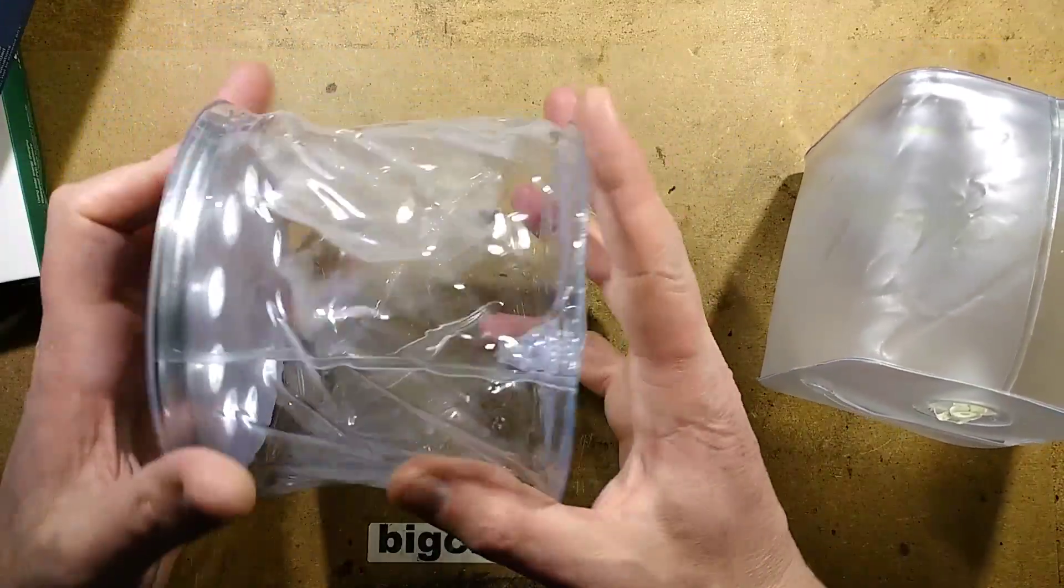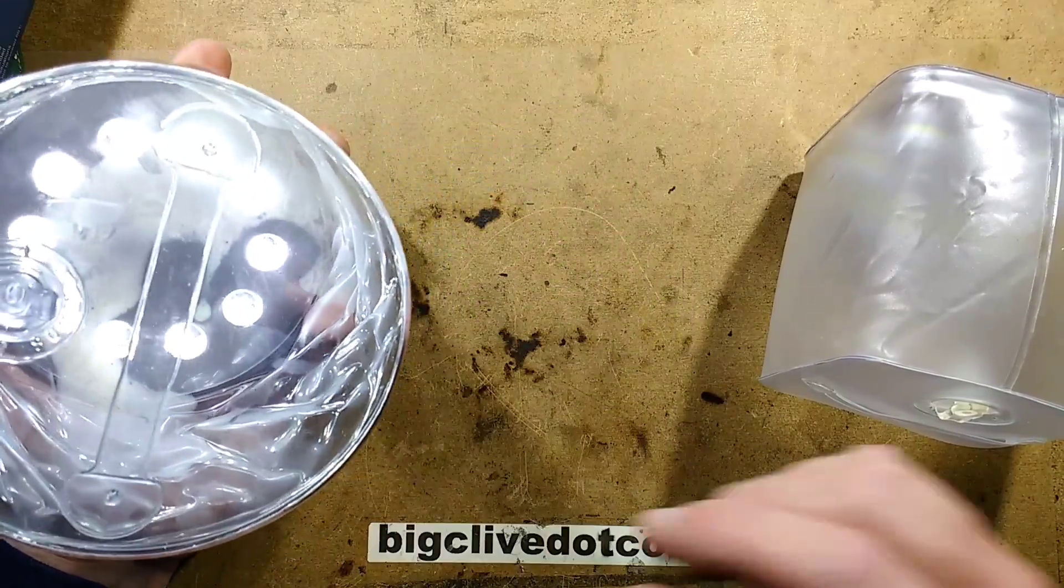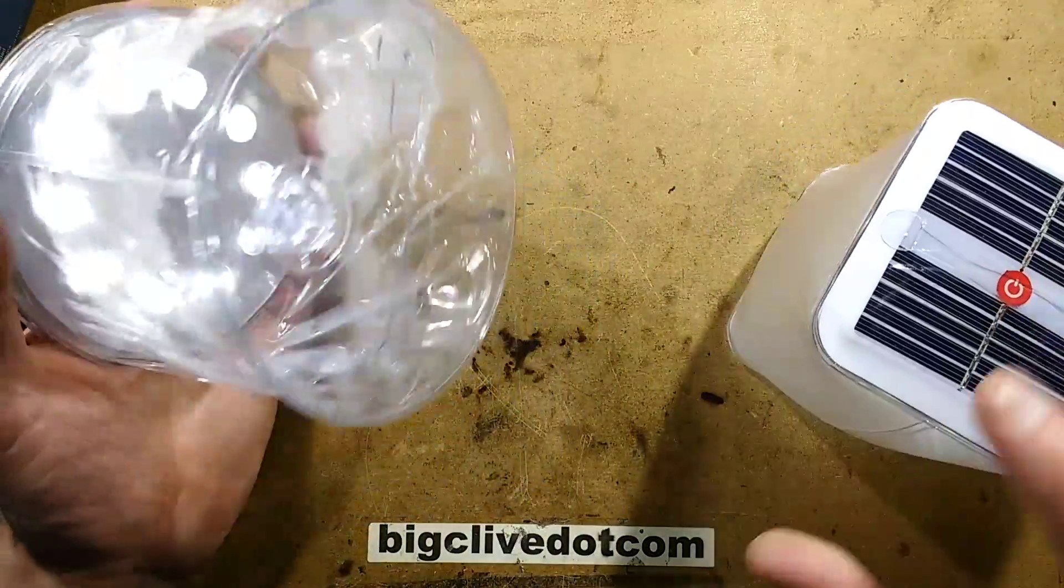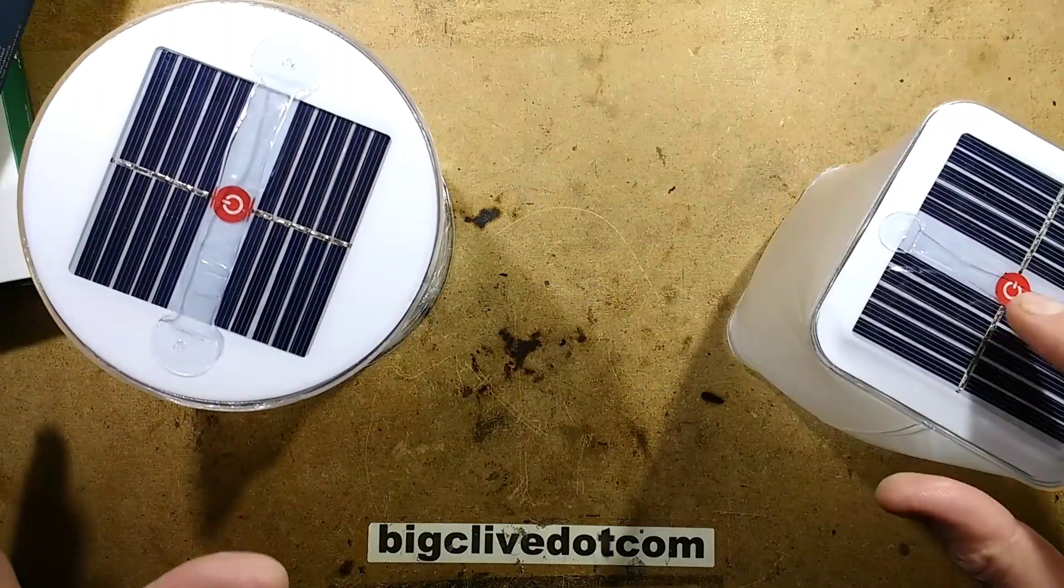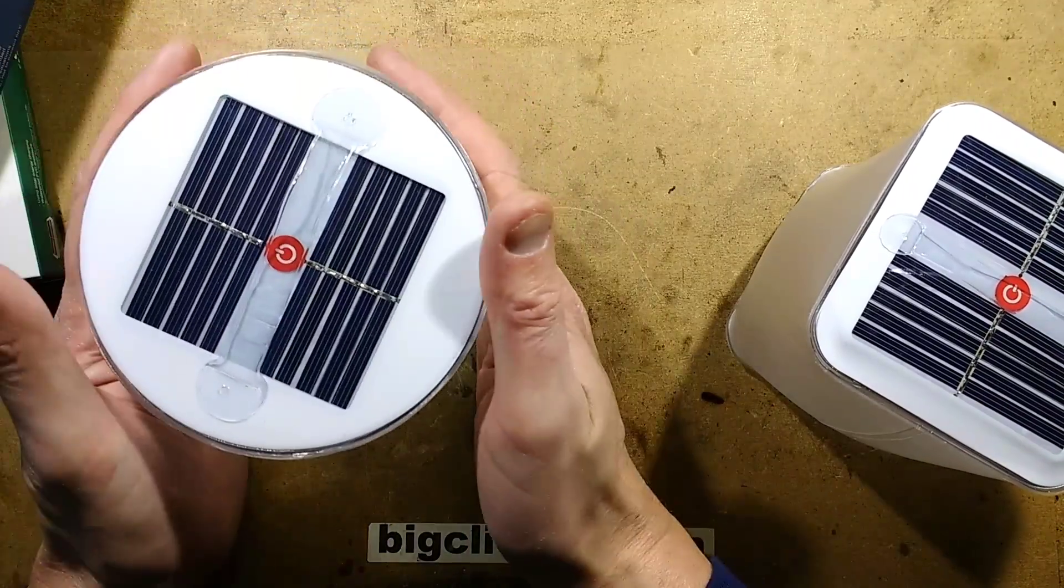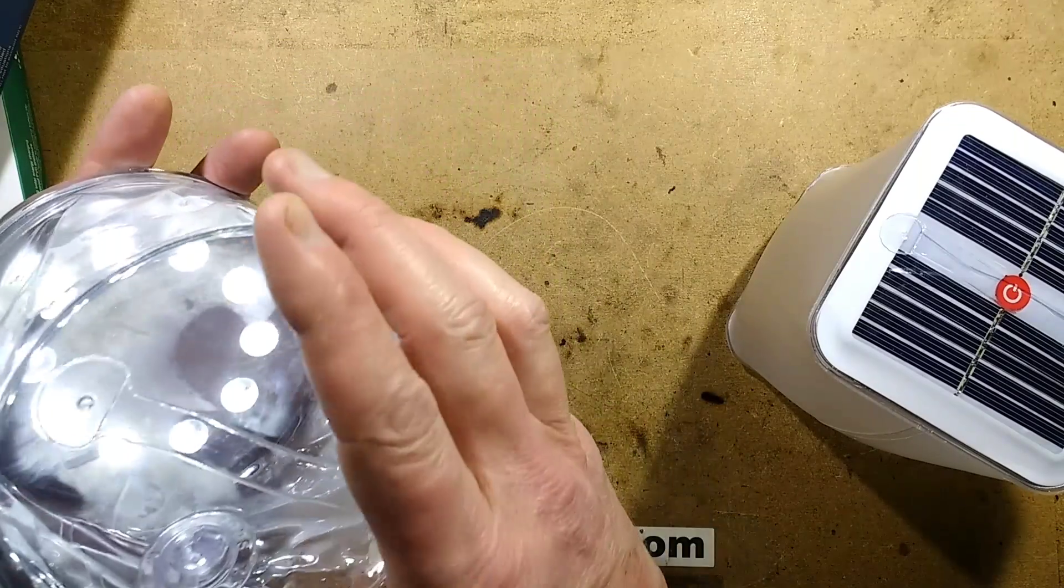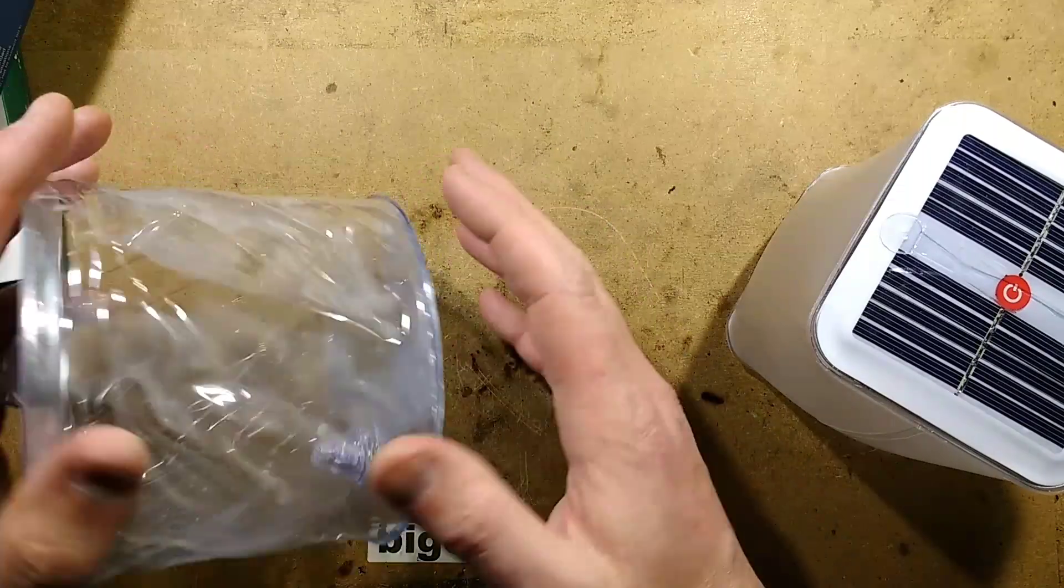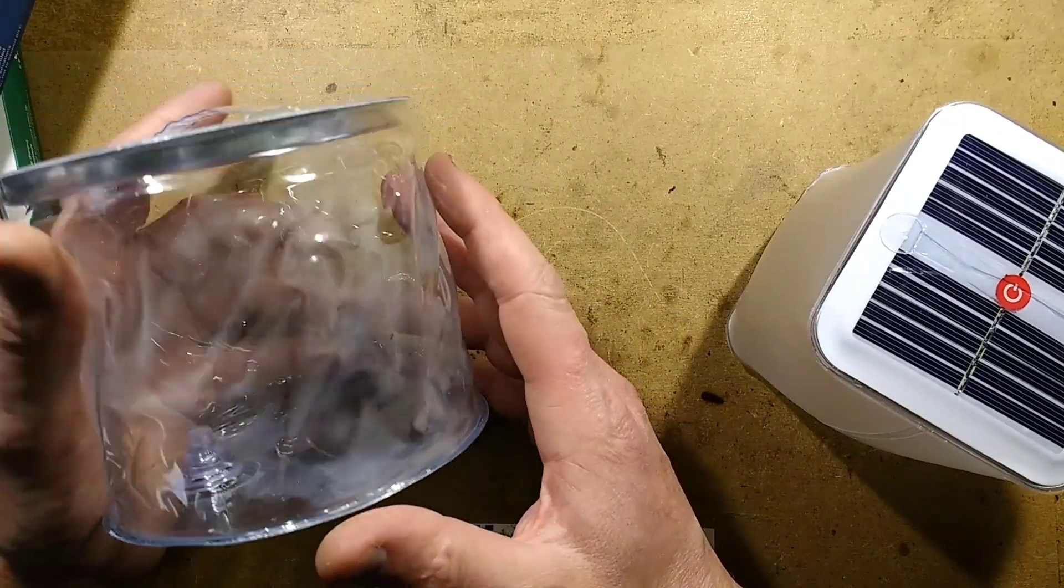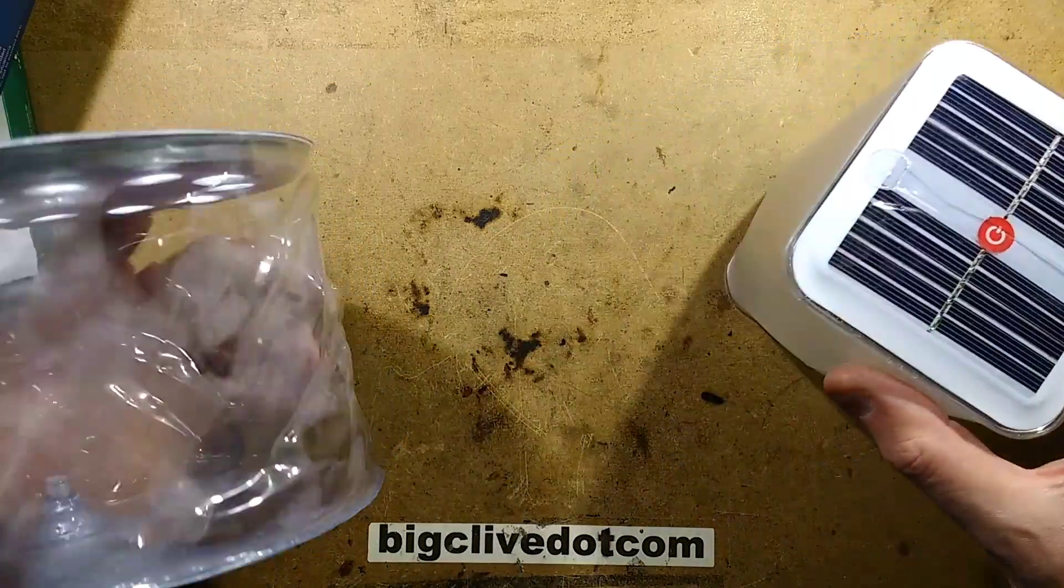This one would work better just with the bare disc on its own because all the clear stuff does is offer a way to stand it on something and act as a sort of splash light source around that. I think I prefer this one from that aspect.